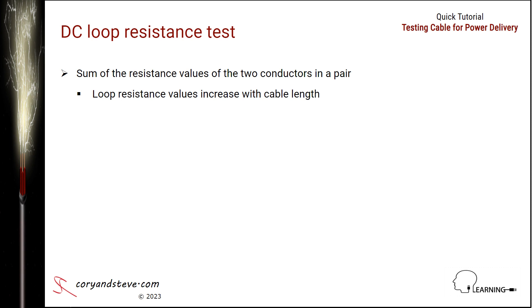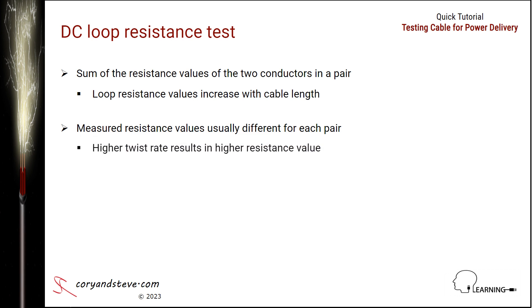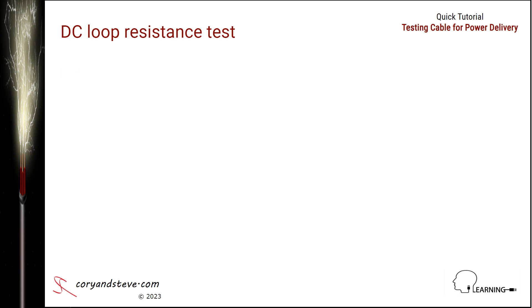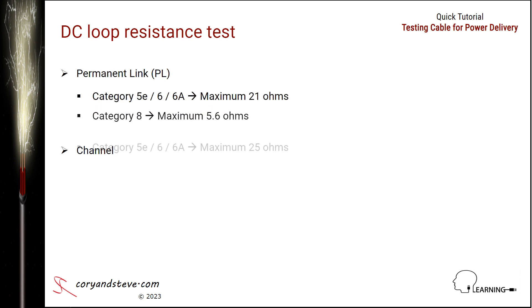Since the four pairs in a cable are twisted at different rates, the measured loop resistance values will usually be slightly different for each pair, with a higher twist rate resulting in a higher resistance value. However, a significantly higher loop resistance value for any one pair may be an indicator of a faulty termination of that pair on a connector located in the link or channel.